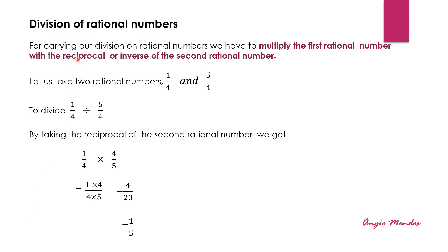Division of rational numbers. For carrying out division on rational numbers, we have to multiply the first rational number with the reciprocal or inverse of the second rational number. Let us take two rational numbers: 1 upon 4 and 5 upon 4. Performing division, we write 1 upon 4 divided by 5 upon 4. Taking the reciprocal of the second rational number, we get 1 upon 4 multiplied by 4 upon 5. We then perform multiplication: 1 multiplied by 4 over 4 multiplied by 5 gives us 4 upon 20. On further reducing this, we get 1 upon 5.